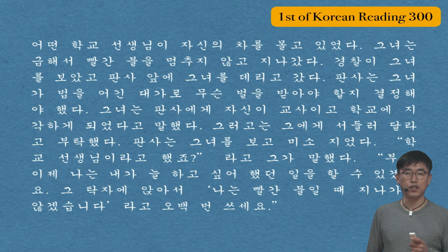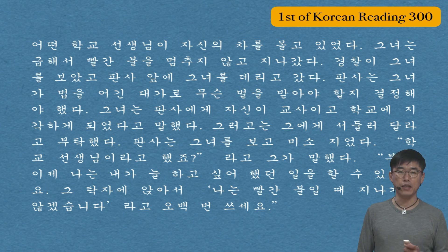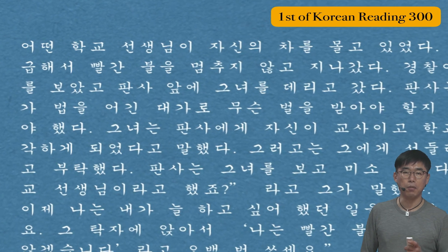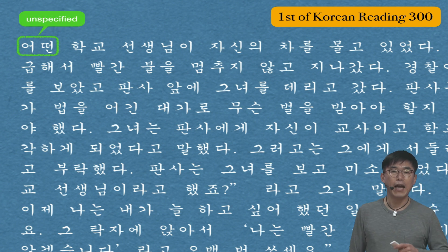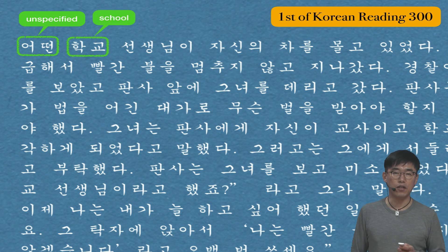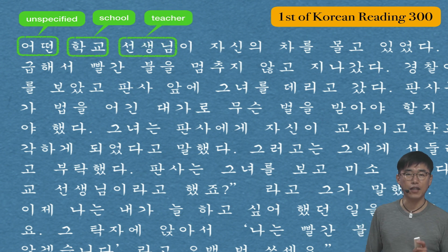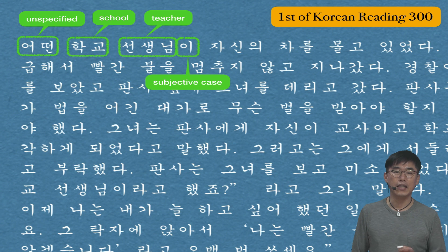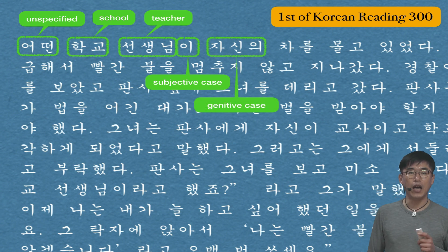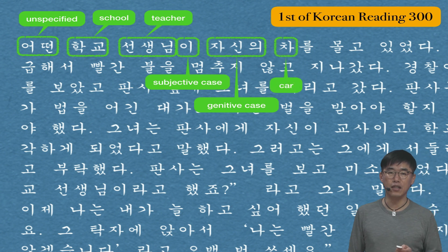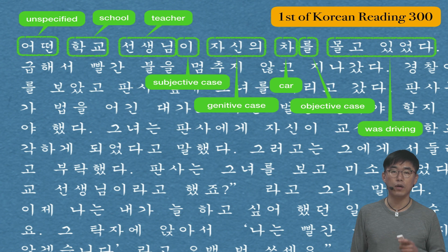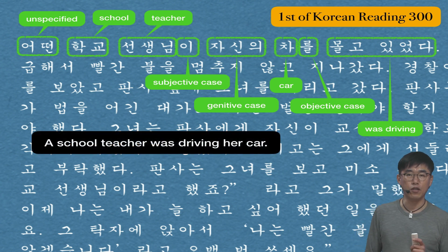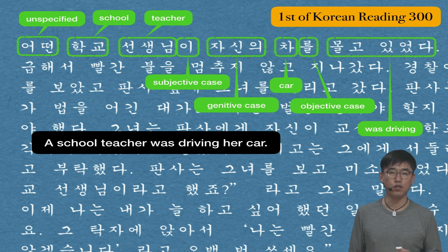Let's start with the first sentence of this paragraph: 어떤 학교 선생님이 자신의 차를 몰고 있었다 — A school teacher was driving her car. The first word 어떤 is placed in front of a noun to indicate an unspecified person or object. 학교 means school, and 선생님 means teacher, so 어떤 학교 선생님 is 'a school teacher.' 이 is the subjective case. 자신의 is the genitive case, 차 is car, 를 is the objective case, and 몰고 있었다 is the past progressive form of 몰다, meaning to drive.